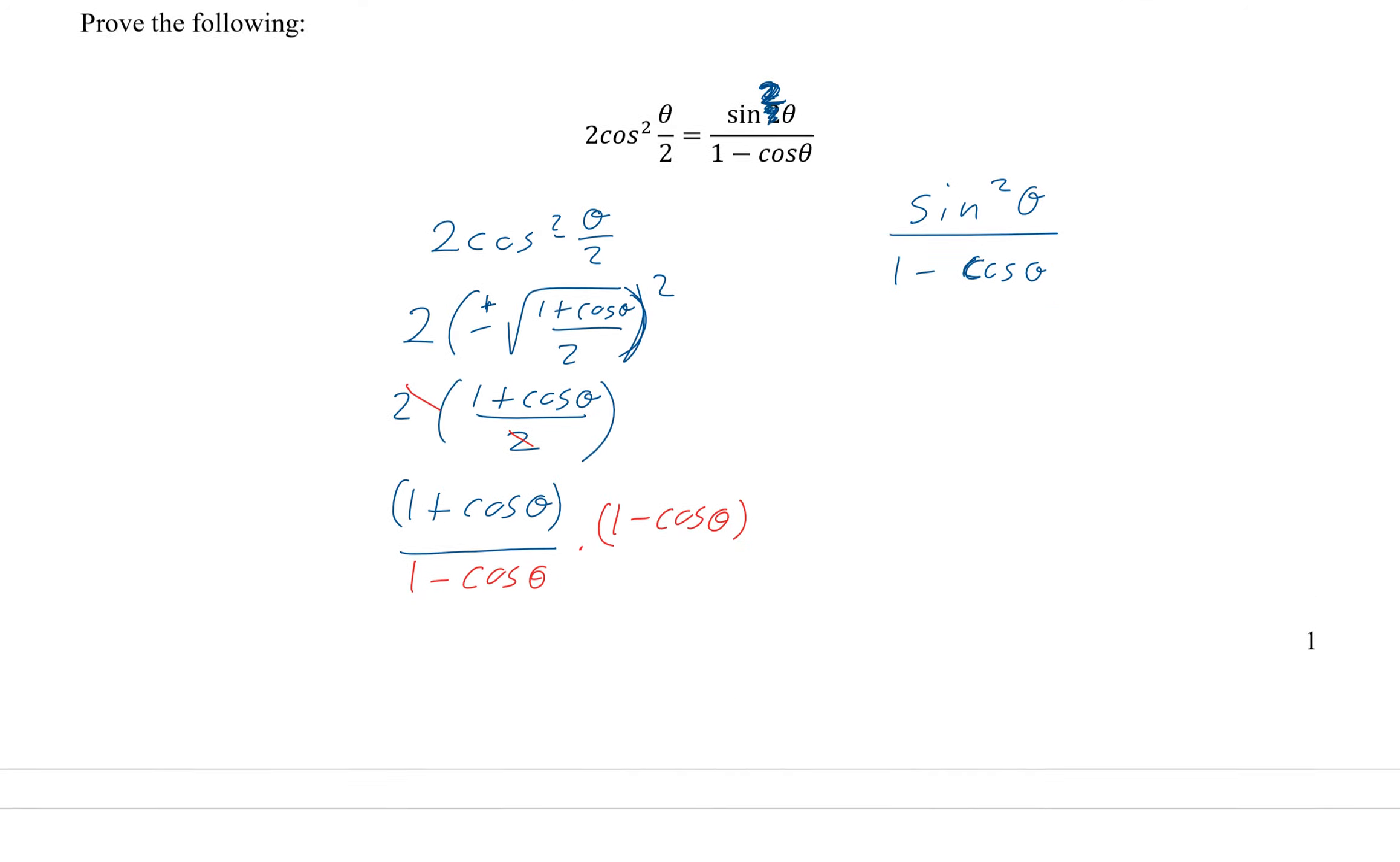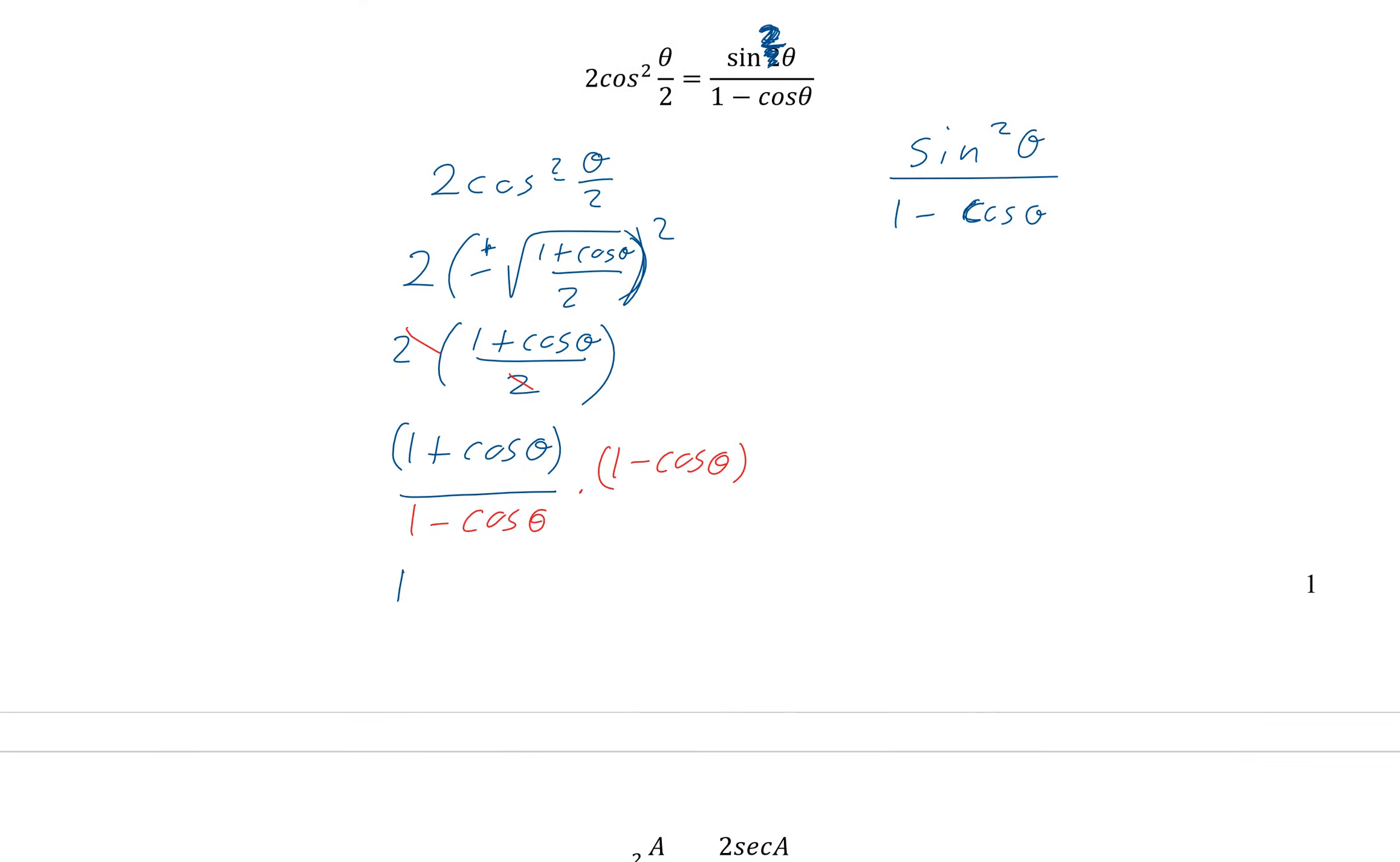And then look what we just introduced. It's the difference of squares. So this is 1 minus cosine squared theta all over 1 minus cosine theta. So this times this is 1.